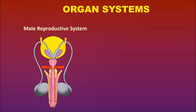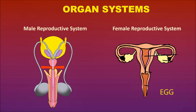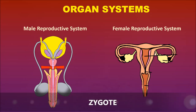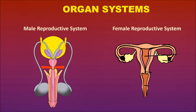In mammals, there are two types of organ systems for reproduction. For example, in human beings, there is a male reproductive organ system and a female reproductive organ system. The male reproductive system produces sperms, whereas the female reproductive system produces eggs. The sperms fuse with the eggs to form a zygote — this is called fertilization. The zygote develops into an embryo and further develops into the young one.